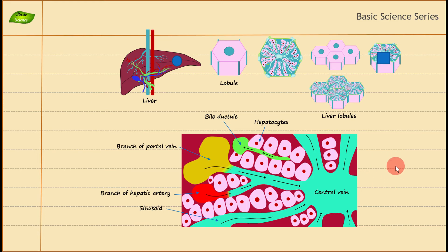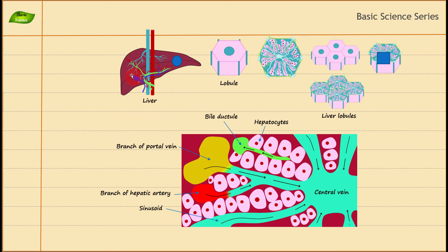I'll conclude this video where I have discussed the major component of the liver, which is the liver lobule. I hope you now have a clear picture of how the liver tissue is organized and how these blood vessels and their branches run inside the liver. I hope you are also well aware of the functions of the liver and the functions of these cellular components. I'll see you in my next video where we will discuss new and interesting topics related to biosciences, microbiology, and physiology.